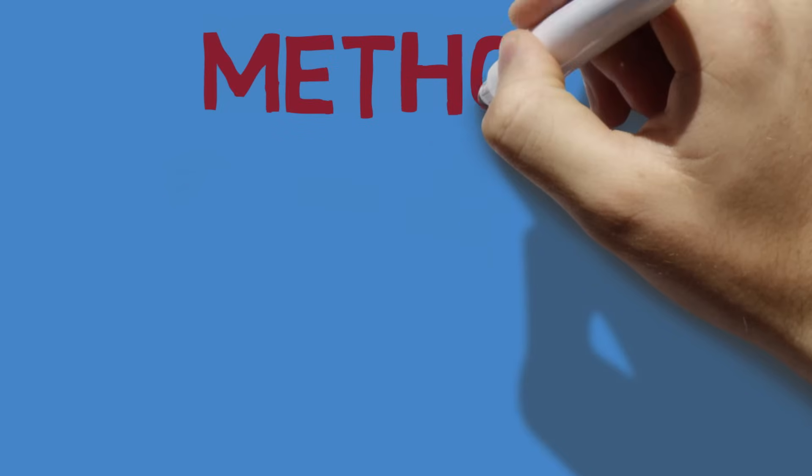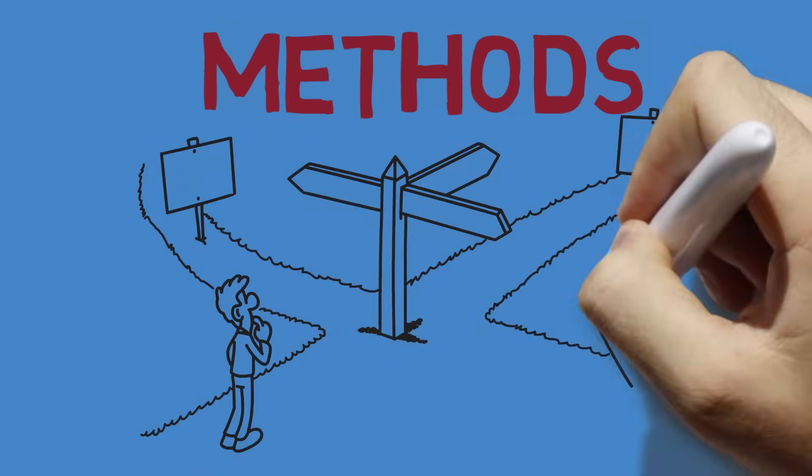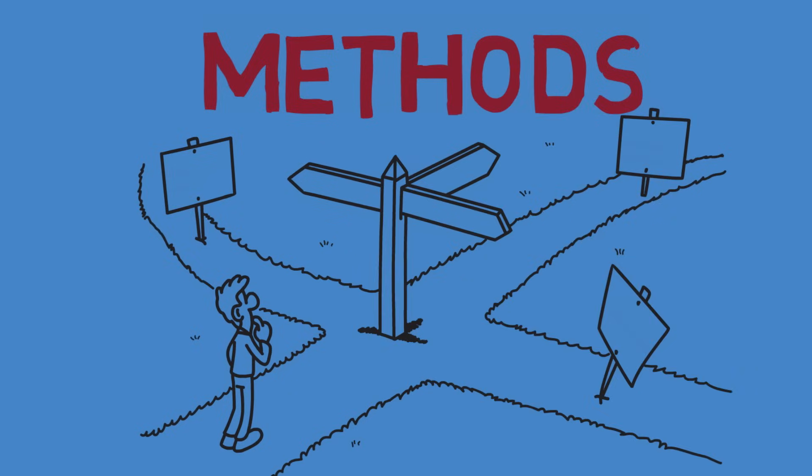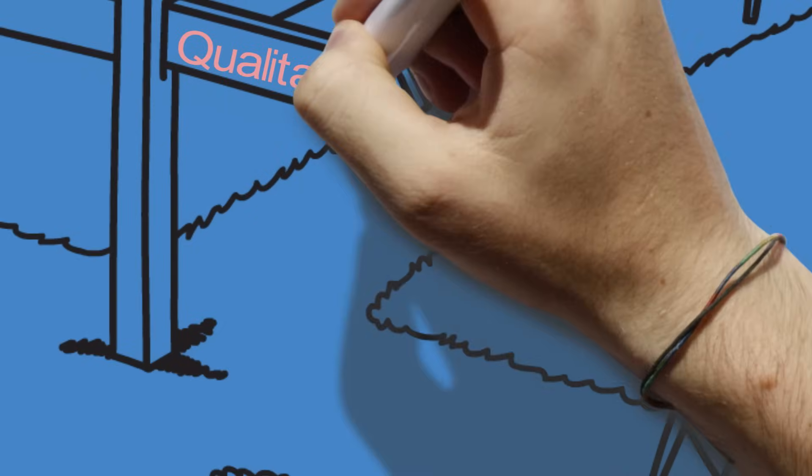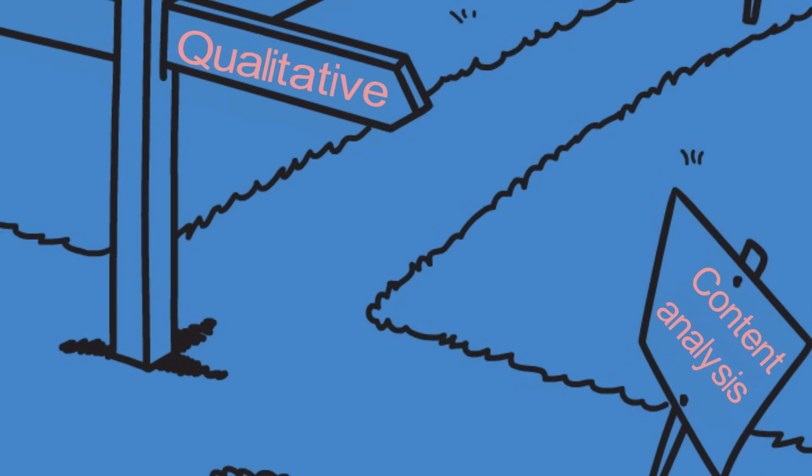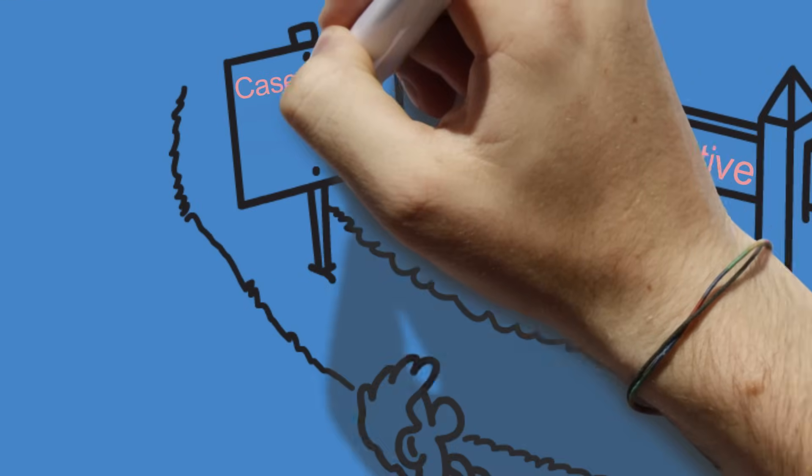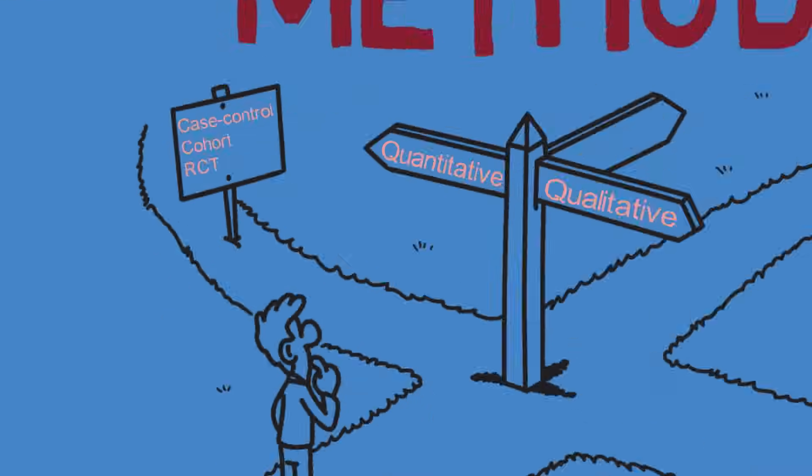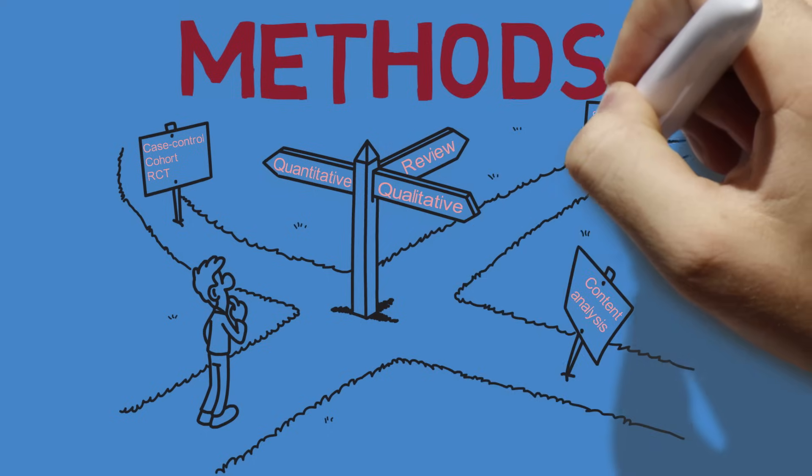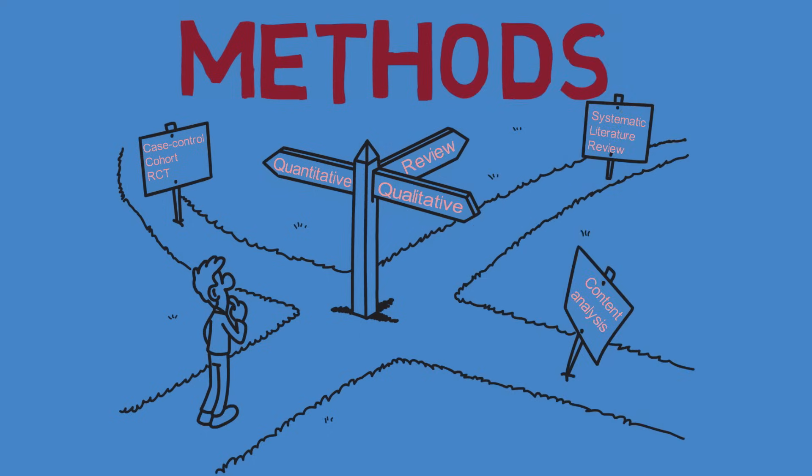Now what your method section looks like depends largely on the type of research that you've undertaken. So method sections in qualitative research look very different to method sections in quantitative research. What I'm going to be talking about here applies mostly to quantitative research, but the basic principles apply to any paper.